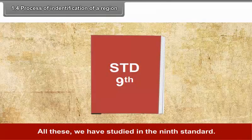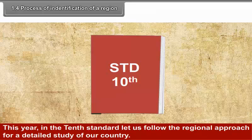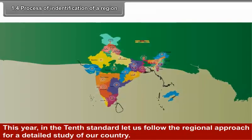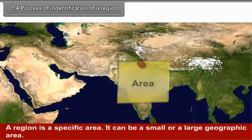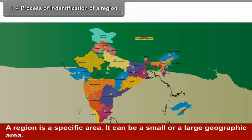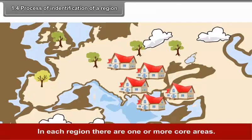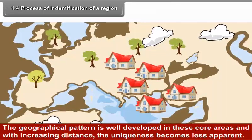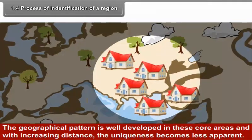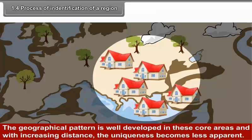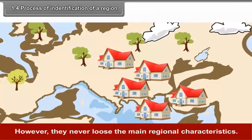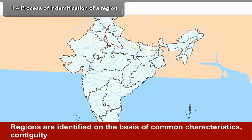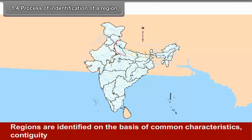1.4 Process of Identification of a Region. What is a region? On what basis are regions defined? All these we have studied in the 9th standard. This year in the 10th standard, let us follow the regional approach for a detailed study of our country. A region is a specific area — it can be a small or a large geographic area. In each region, there are one or more core areas. The geographical pattern is well developed in these core areas, and with increasing distance, the uniqueness becomes less apparent. However, they never lose the main regional characteristics.